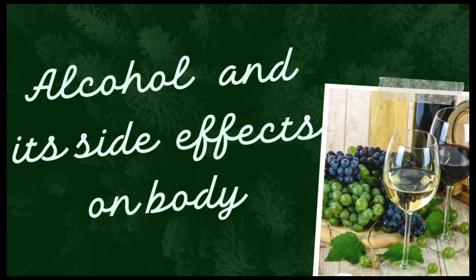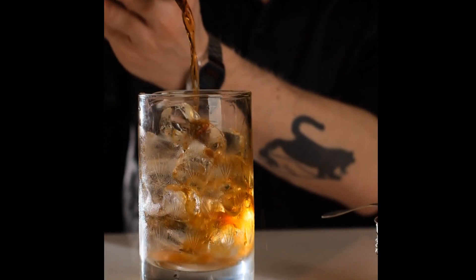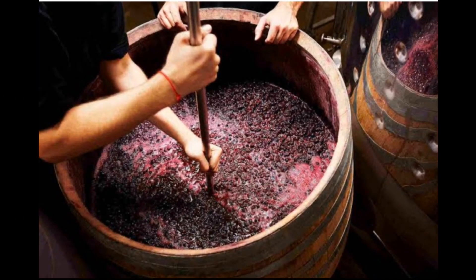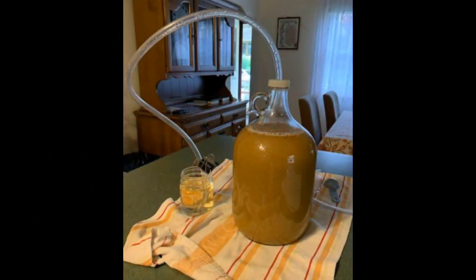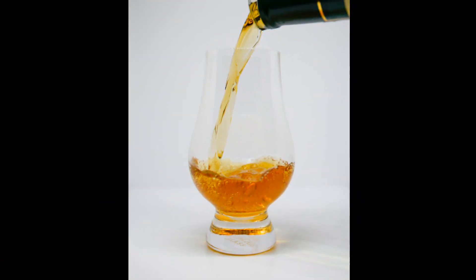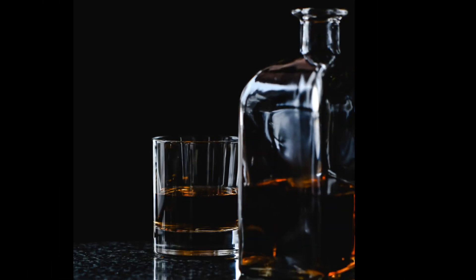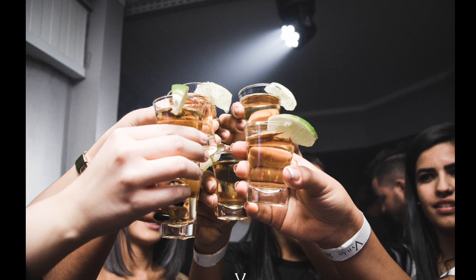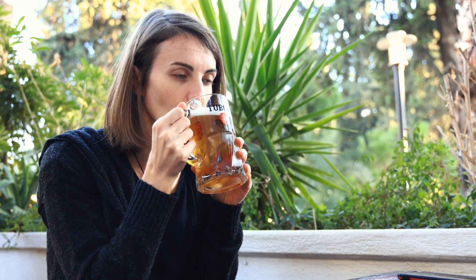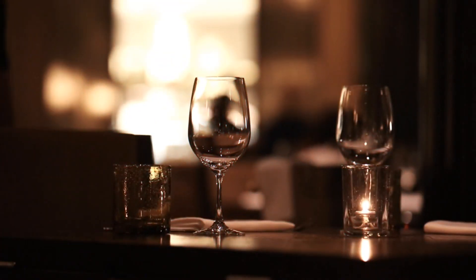Hey friends, in this video we will learn about alcohol and its side effects on the body. An alcoholic beverage is a drink that contains ethanol, which is produced by fermentation of grains, fruits, and other sources of sugar. It is available in the market in different forms like wine, beer, whiskey, vodka, gin, and scotch. According to WHO, there is no safe amount of alcohol that does not affect health. The excess use of alcohol causes a high burden of diseases and has significant social and economic consequences. Let's explore the bad effects of alcohol on the body.